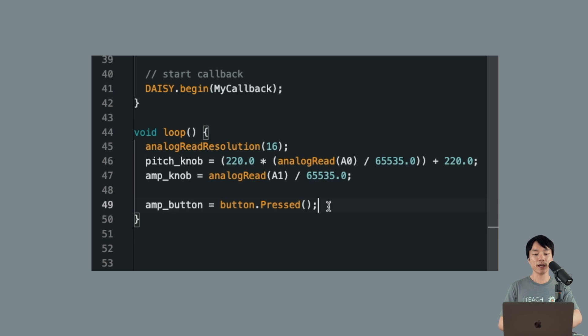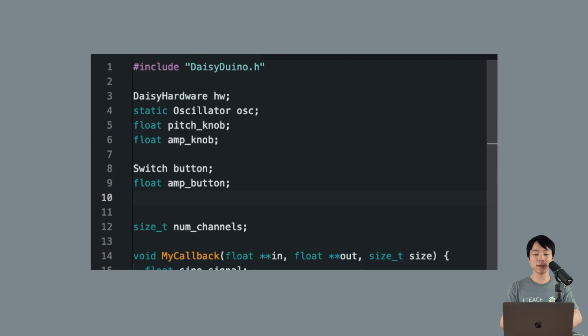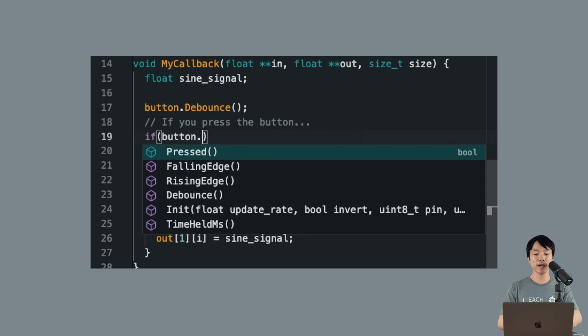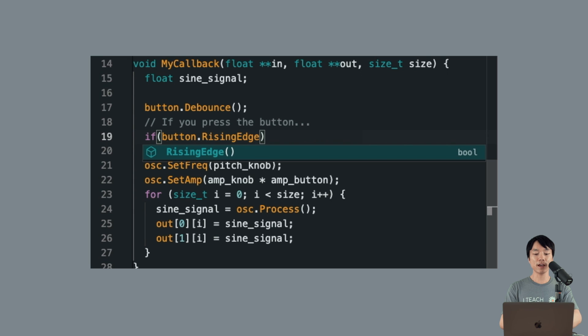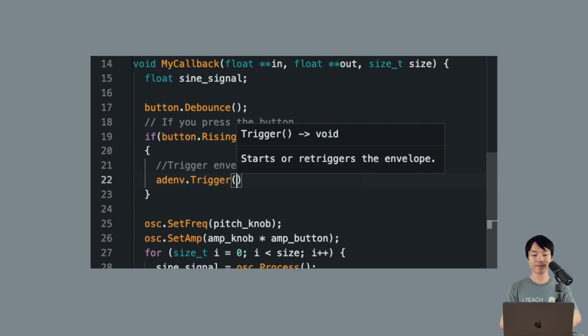We'll start by deleting the line amp-button equals button pressed. Next, we'll go up to the top and add static ADENV ADENV. Then in my callback, we'll add the following lines: If button rising edge ADENV trigger. This means that if the button is pressed down, we'll generate or trigger the ATTACK and DECAY envelope.